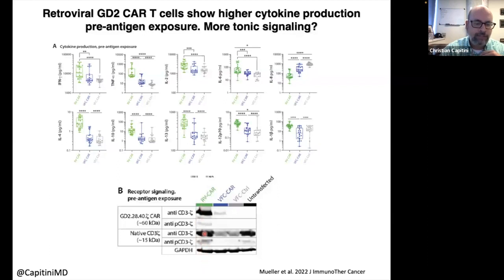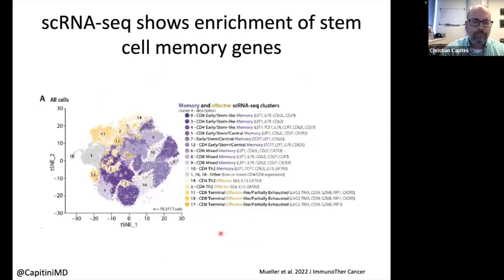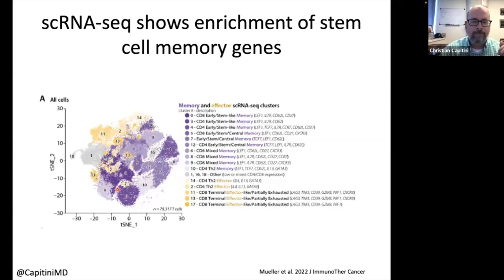We proved this by measuring the cytotoxicity signaling in the CAR — retroviral CARs show the cytotoxicity signal really turned on in black bands, but our CRISPR has only a faint light gray; they're barely turned on, and they haven't seen GD2 yet, so they shouldn't be. RNA-seq shows our CRISPR product has a lot of memory potential versus exhausted cells. Putting these into animals with GD2-positive human neuroblastoma, mock-treated T cells all die in two months, but CRISPR and retrovirus had equal control of survival — no statistical difference, so CRISPR is not inferior.